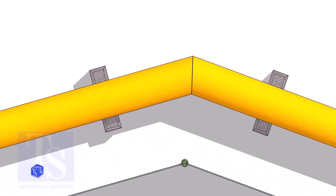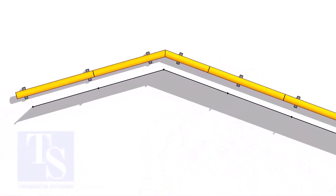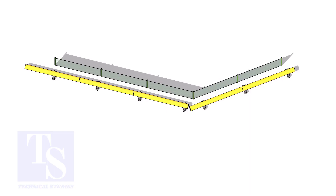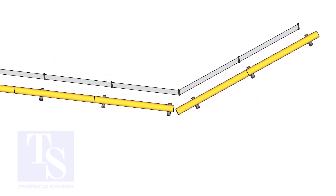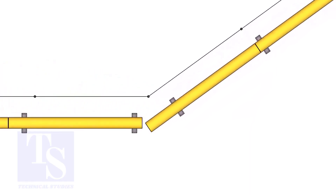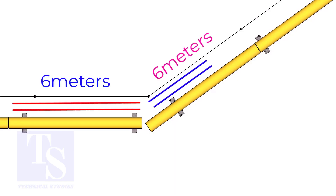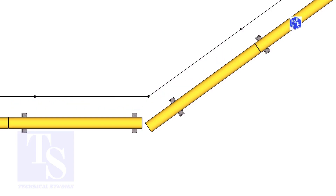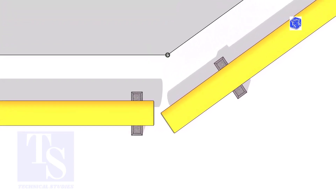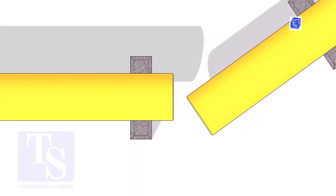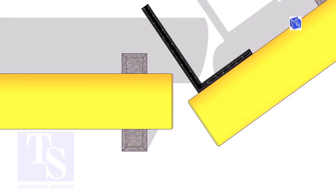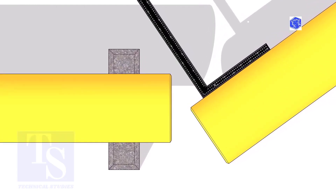If you have any doubts, please comment. The pipe shall be parallel to the fencing, not necessarily the entire length, but at least 6 meters on both sides. It is not necessary that the center lines of both pipes are in a line. Hold a right angle on the pipe as shown. Hold a scale on the other pipe as shown.